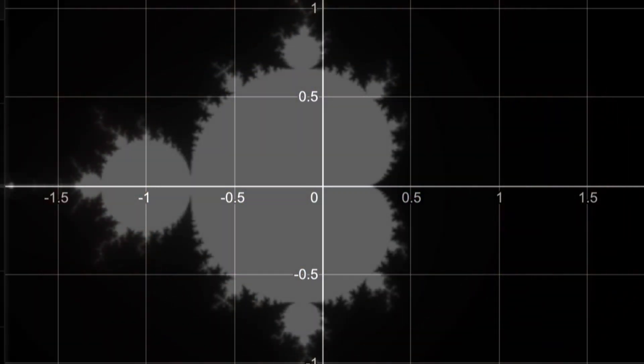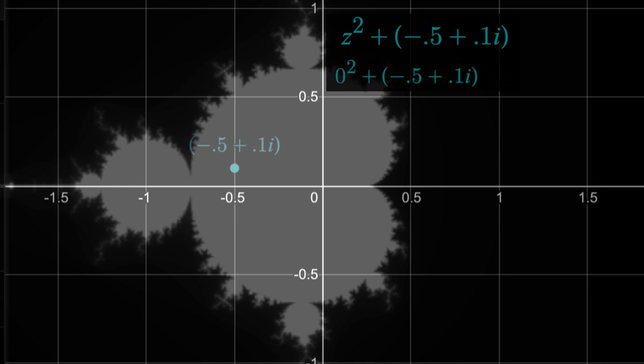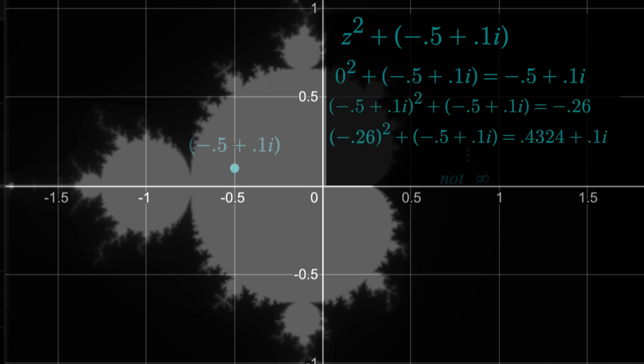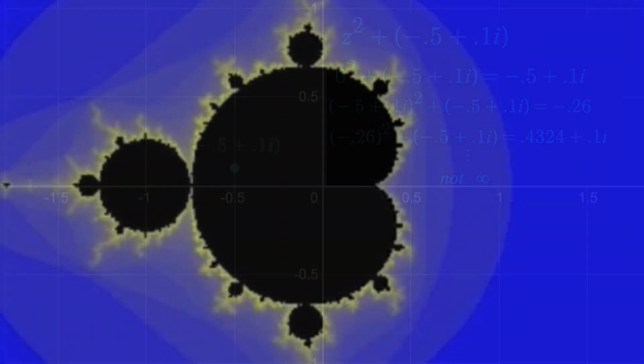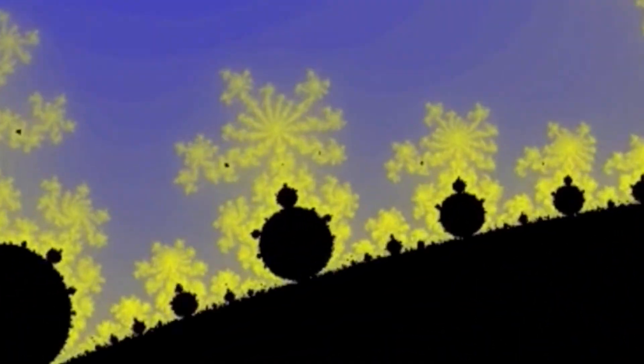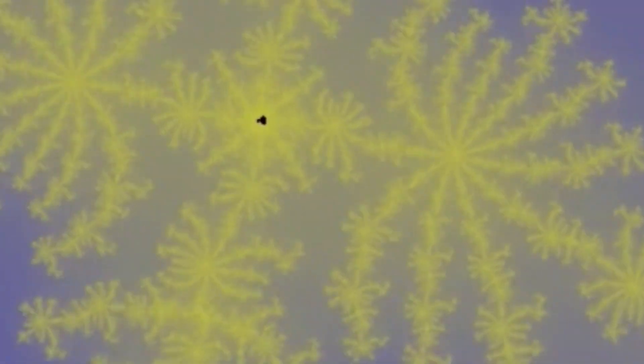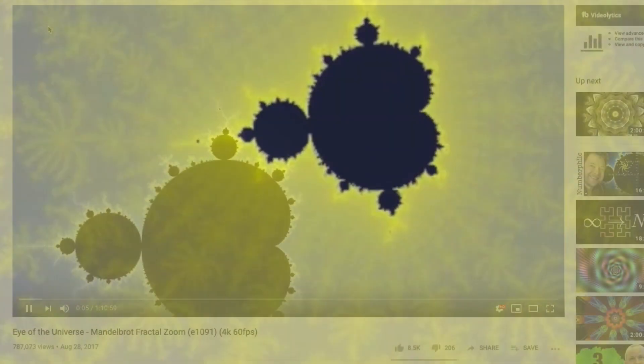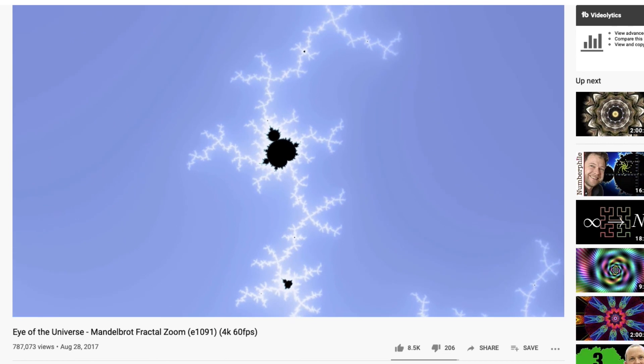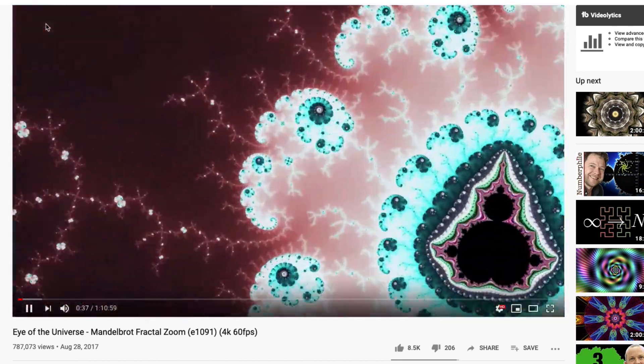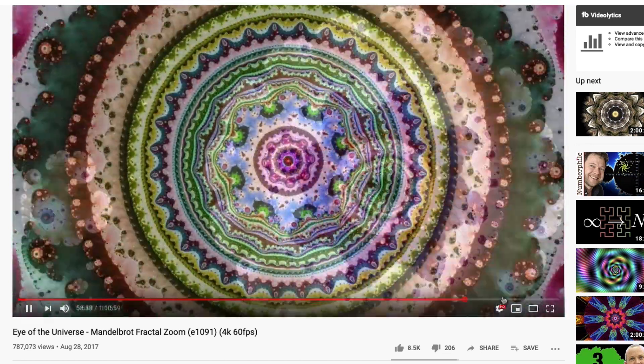To know whether something's in the Mandelbrot set, like negative 0.5 plus 0.1i is, just take the function z squared plus that number, plug in z equals 0, then iterate the function over and over like before. If the outputs don't diverge to infinity, then it is in the Mandelbrot set. And the beauty within these is literally endless, because as you zoom in, you keep finding new shapes and patterns. And we can see that fractal nature as we come across more mini Mandelbrot sets. But there are videos here on YouTube over an hour long that give incredible detail to what it looks like as you magnify these fractals.